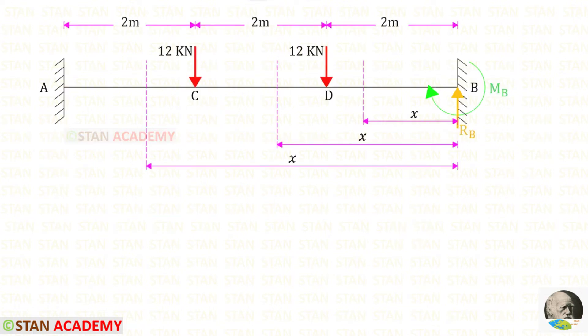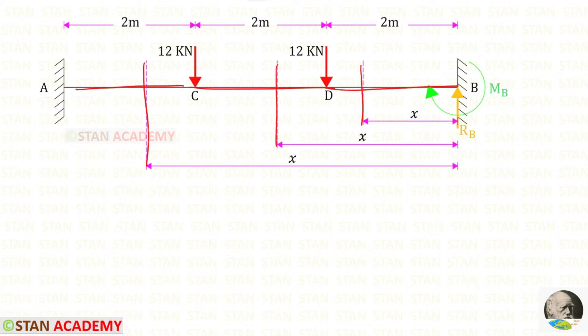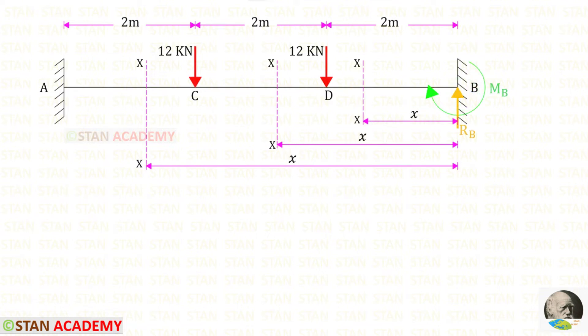You can see that I have made three sections: one section in AC, one section in CD, and one section in DB. I have made all of the sections at the distance of X from the point B. Let us name the sections as XX.